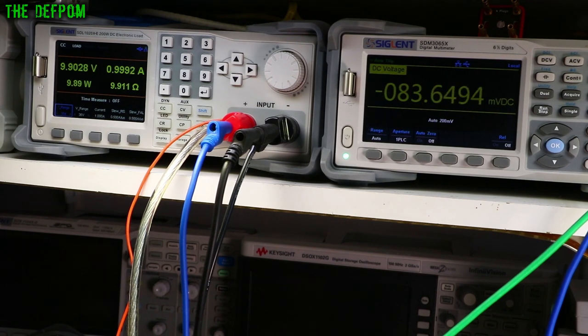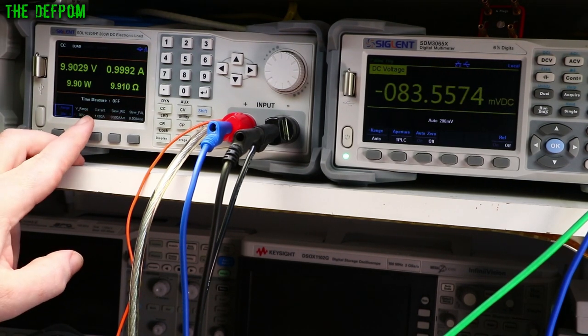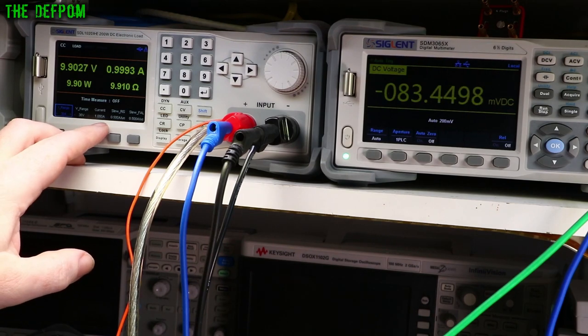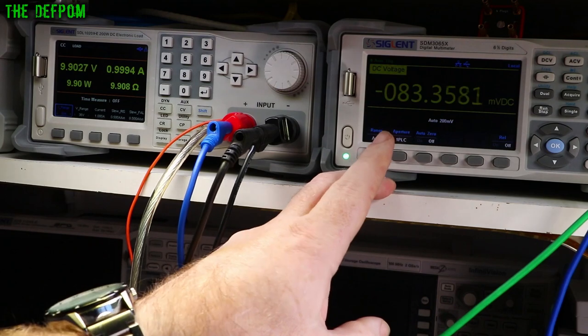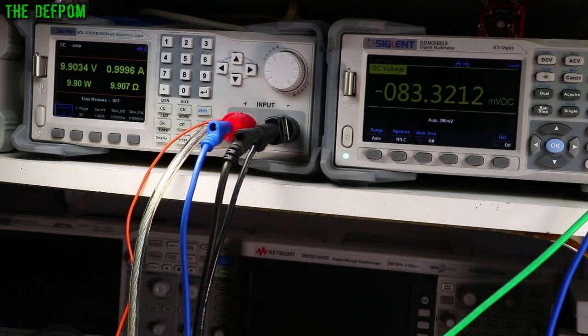So with that we can actually do the maths and work out the resistance of the wire. Because I'm doing a 1 amp loading, this makes it easy. It's easy maths because of that. So we're losing 84 millivolts with 1 amp. That makes that 84 milliohms. You got that?